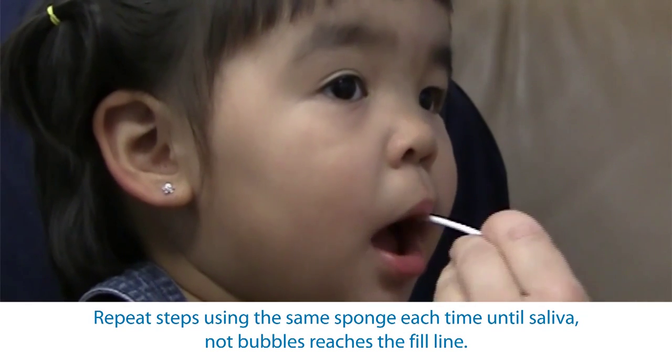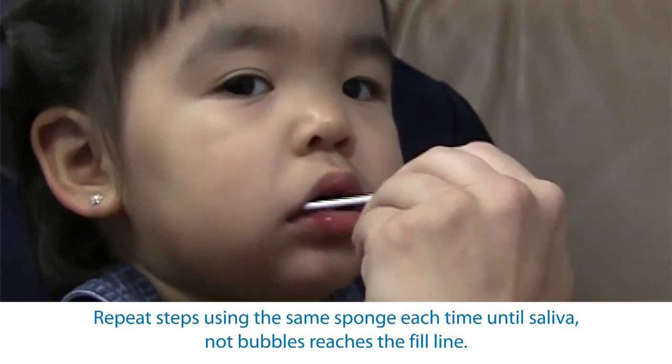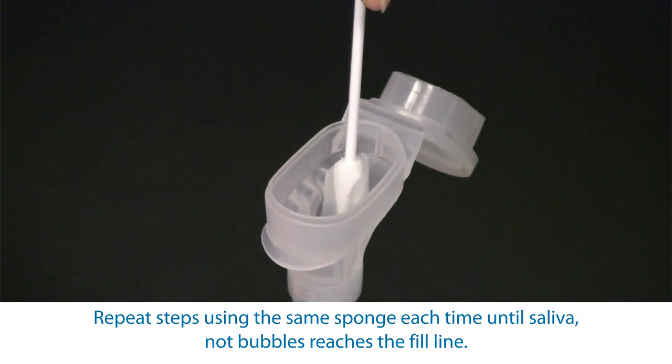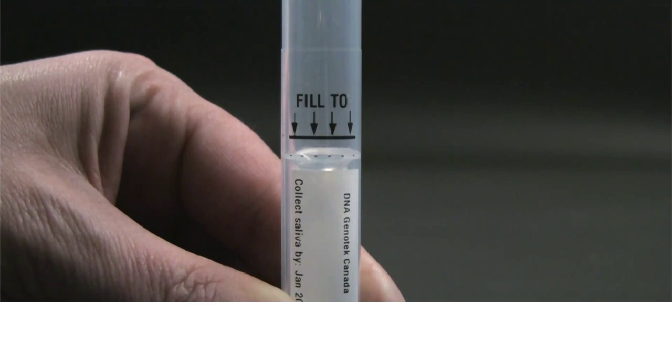Repeat these steps using the sponge until saliva, not bubbles, reaches the fill line. You will find the fill line on a label on the side of the tube. Check the sponge for damage each time before inserting it into your child's mouth and replace with a spare sponge as needed.